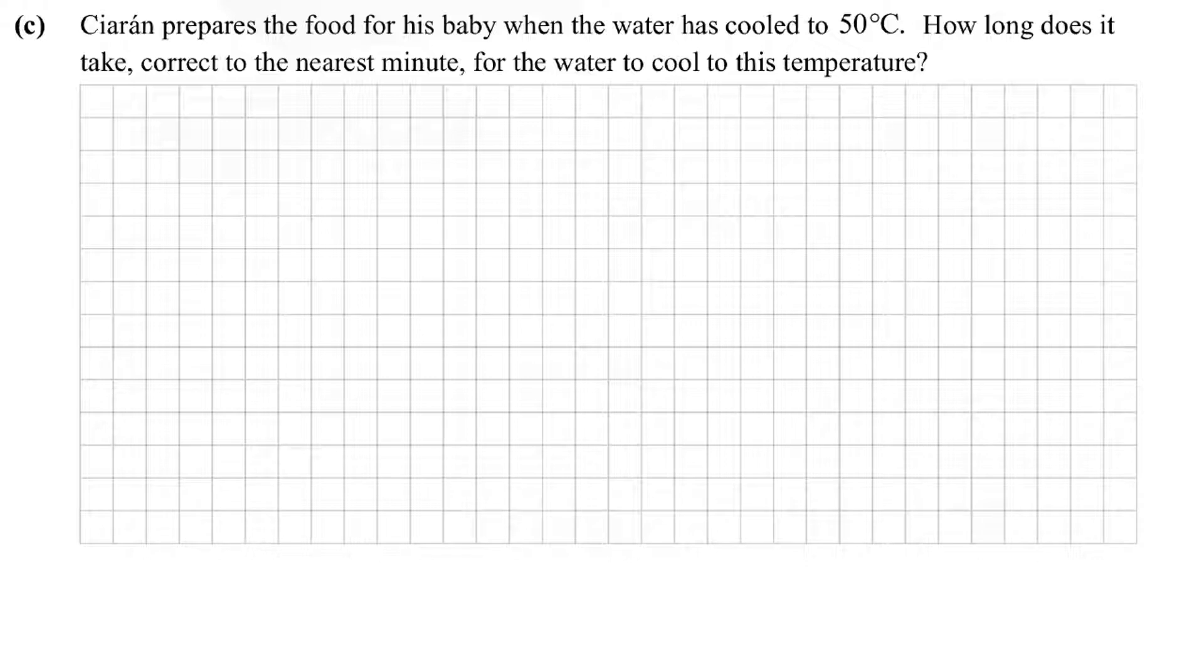Part (c): Ciarán prepares food for his baby when the water is cooled to 50 degrees. How long does it take, correct to the nearest minute, for the water to cool to this temperature? Now our formula is 77e to the power of minus 0.0339t. We know y is going to be 50 minus 23, which gives me 27, and we're trying to work out t. So 27 equals 77e to the power of minus 0.0339t. Just like in the previous part, we want to get the exponential part on its own.